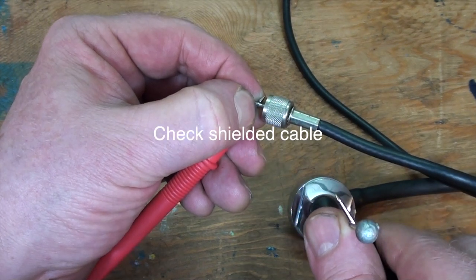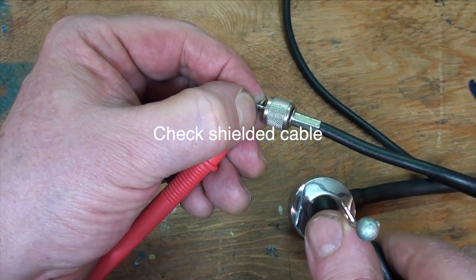You can check shielded cable like on this VHF radio antenna and check the shield as well.